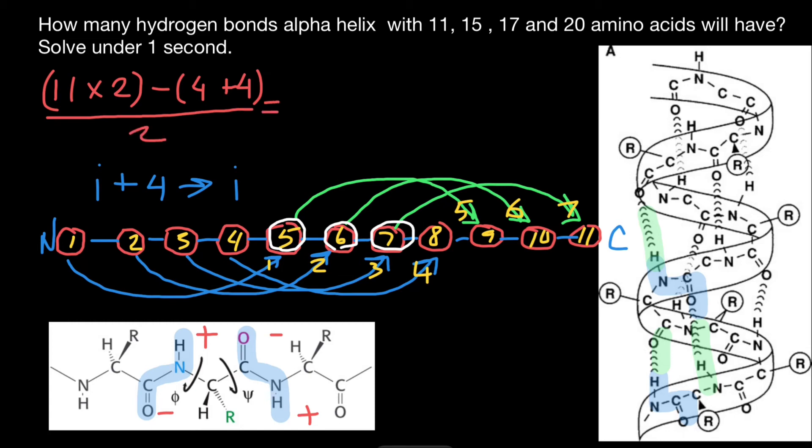And the answer is going to be—take a look—22 minus eight is going to be 14, divided by two is going to be seven. And seven is exactly the number which we got here in our calculations.